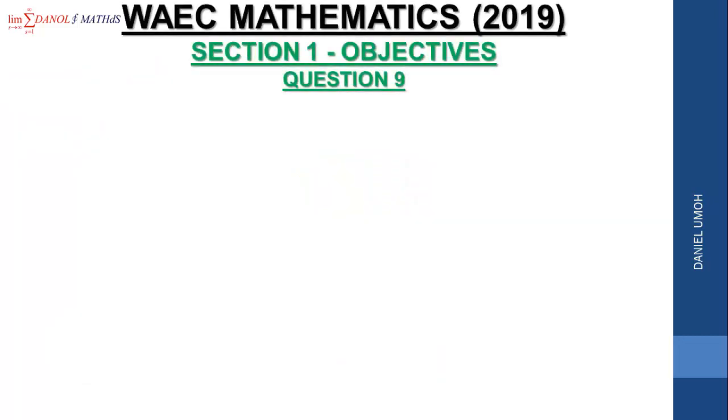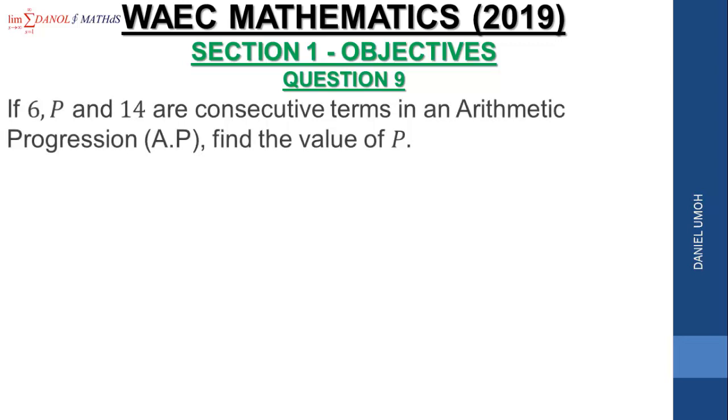In this video, we shall be considering the solution to WAEC May/June Mathematics 2019 Objective Question 9. The question says: If 6, P, and 14 are consecutive terms in an arithmetic progression (A.P.), find the value of P.